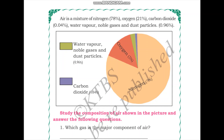Air is a mixture of different types of gases. Now let's learn about the different components of air. Air is majorly made up of nitrogen, which is 78% of air. The next major component is oxygen — we need oxygen to breathe. We also know that we breathe out carbon dioxide.